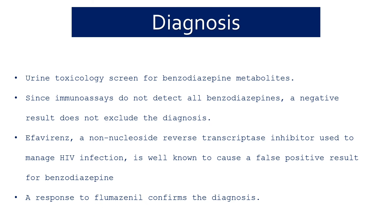Regarding diagnosis, CNS depression with normal vital signs is the primary indicator. If available, send for a urine toxicology screen for benzodiazepine metabolites. However, immunoassays do not detect all benzodiazepines, so a negative test does not exclude the diagnosis. Clinical findings and CNS depression remain the primary basis for diagnosing benzodiazepine overdose.